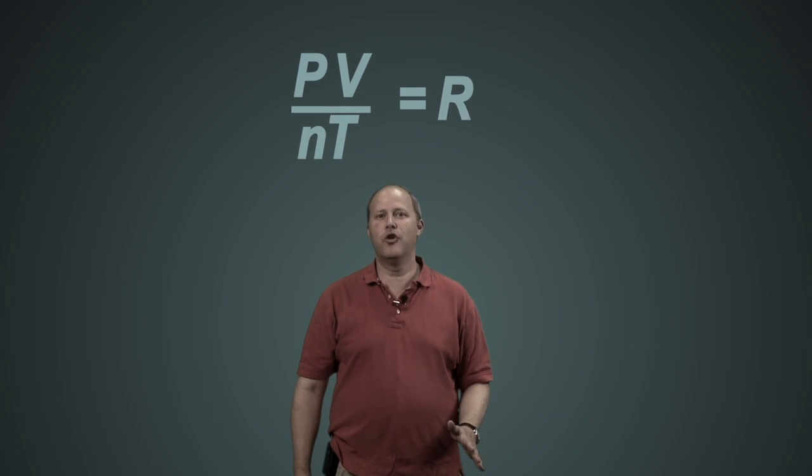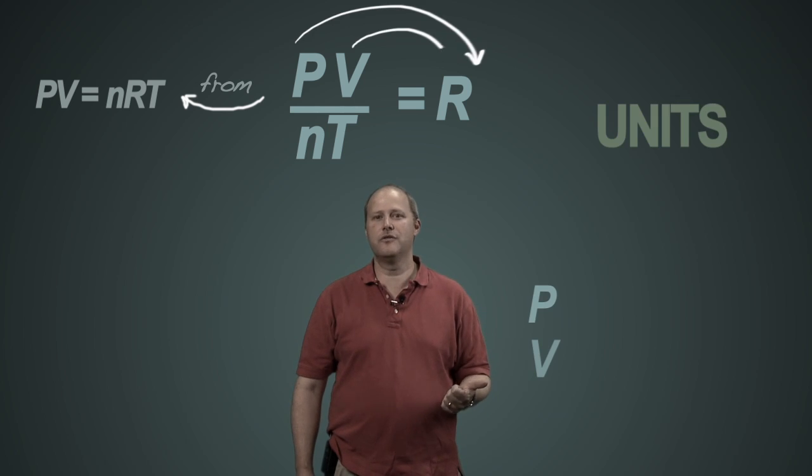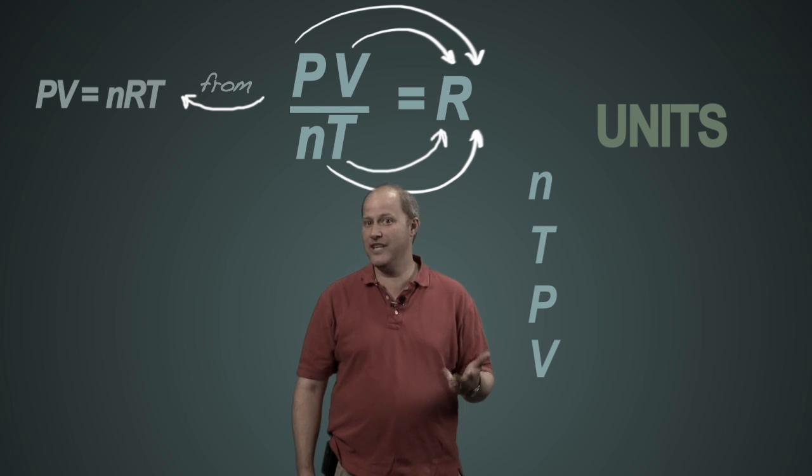It's pressure times volume divided by the number of moles times temperature. So the value for R that you get is going to depend on what units you have for pressure, what units you have for volume, what units you have for moles, and what units you have for temperature.